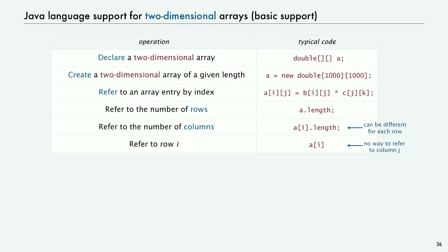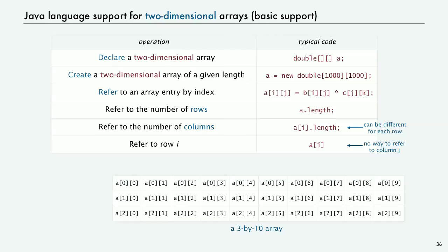In Java, there are arrays of arrays, and once you understand that, then you can see these. So this is a three by ten array with three rows and ten columns. We think of it as laid out in this row major order, where we put all the elements in each row, one after the other, and then the columns are vertical.